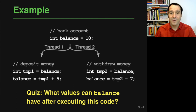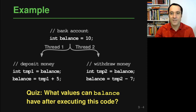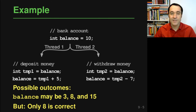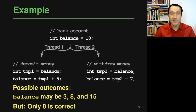As a quiz: what values can balance have after both threads finish, given the data races? The possible outcomes are 3, 8, or 15. But only 8 is correct — if you start with 10, add 5, and subtract 7, you want 8. Without proper synchronization on the concurrent accesses to balance, data races lead to incorrect behavior.